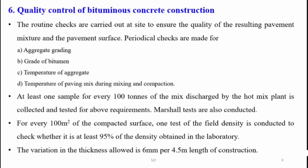For quality control of bituminous concrete construction, routine checks are carried out at the site to ensure quality of the pavement mixture and surface. Periodic checks are made for aggregate grading, grade of bitumen, temperature of aggregate, and temperature of paving mix during mixing and compaction. At least one sample for every 100 tons of mix from the hot mix plant is collected and tested, and Marshall tests are also carried out. For every 100 square meters of compacted surface, one field density test is conducted to ensure it is within 95% of laboratory density. Variation in thickness allowed is 6 mm per 4.5 meters of construction length.